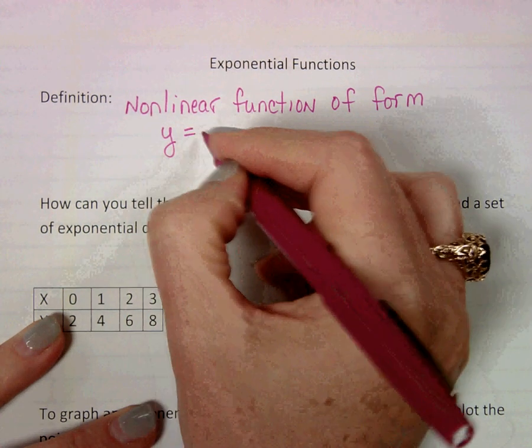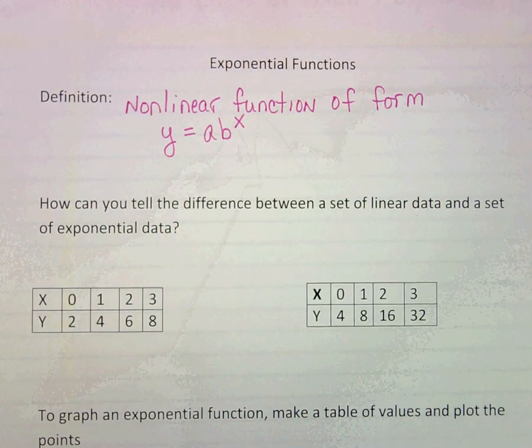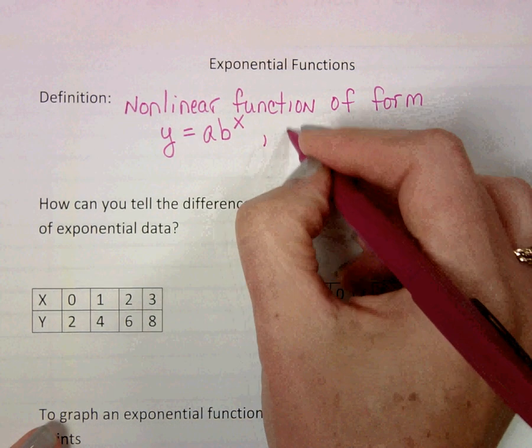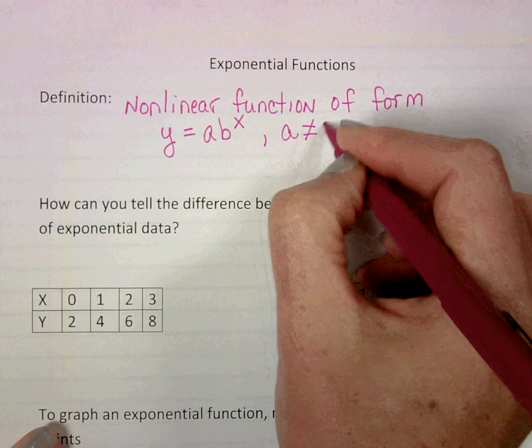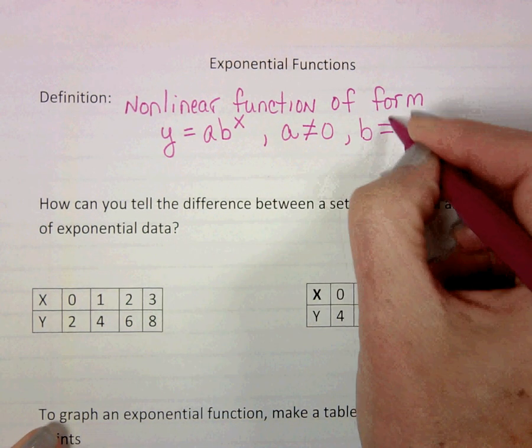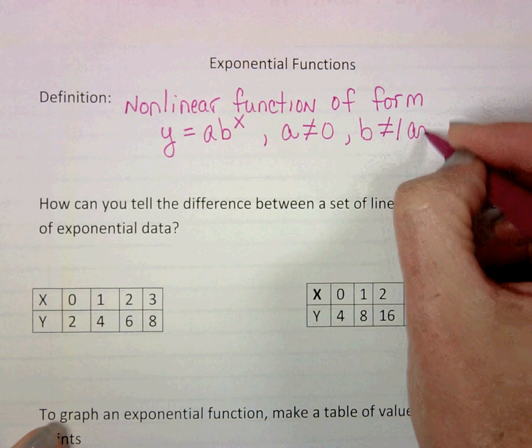y equals ab to the x power. So exponential functions are going to look like that. Some important things is that a cannot be 0, b cannot be equal to 1, and it has to be greater than 0.